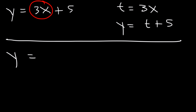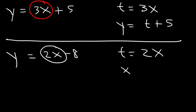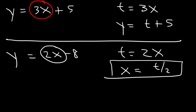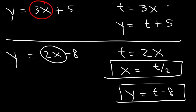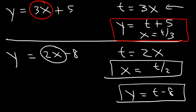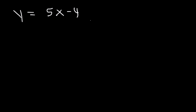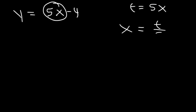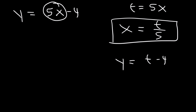Another example: if y = 2x − 8, set t = 2x, so x = t/2, and y = t − 8. Similarly, for y = 5x − 4, set t = 5x, giving x = t/5 and y = t − 4. That's a quick and simple way to get the parametric equations.